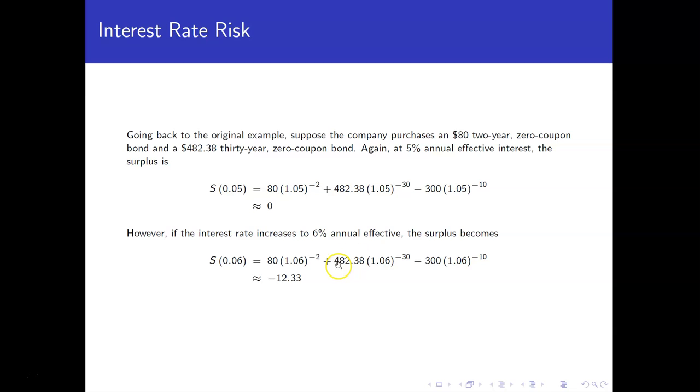So, going back to the original example, let's say instead we have purchased an $80 two-year zero-coupon bond and a $482.38 30-year zero-coupon bond. Again, at 5% annual effective, we get a zero surplus. However, now, if the interest rate increases, the surplus becomes negative.